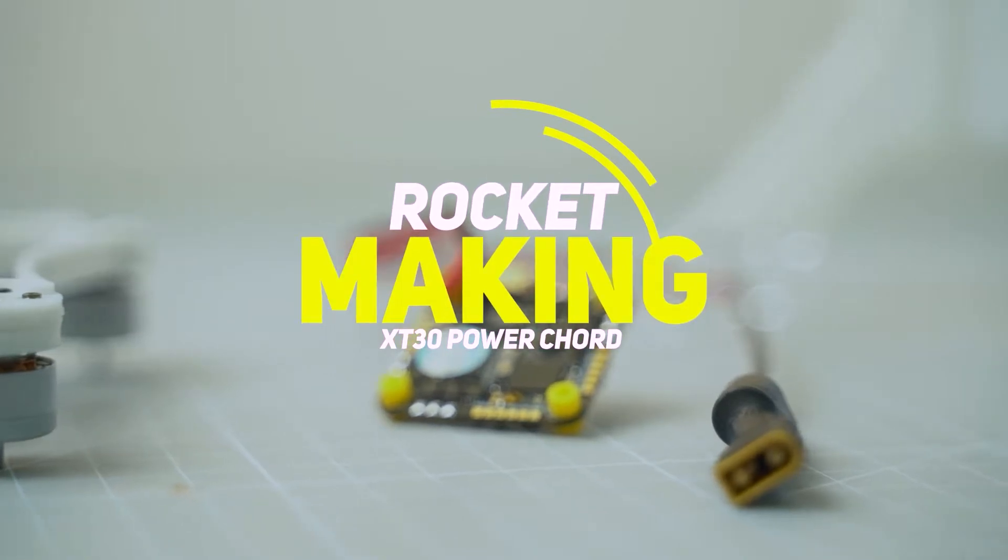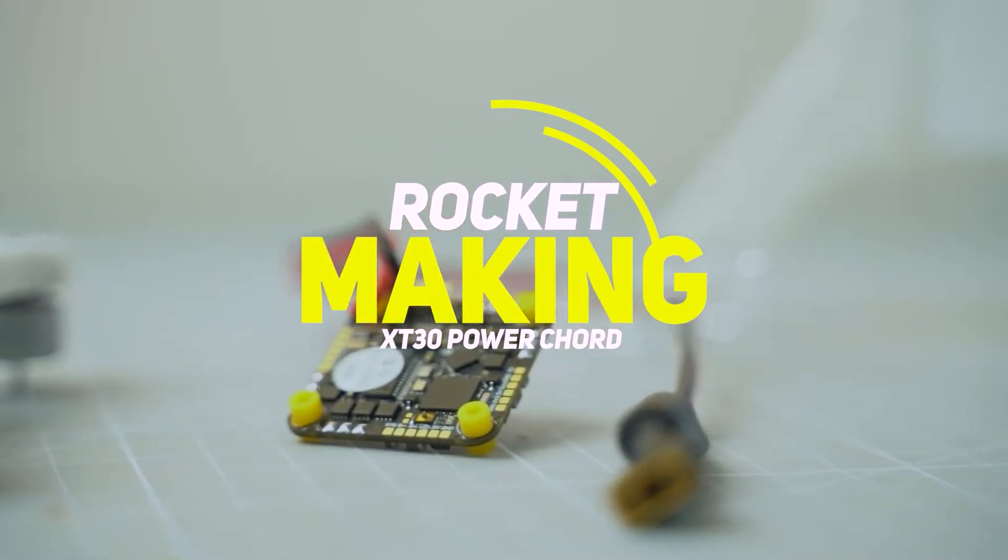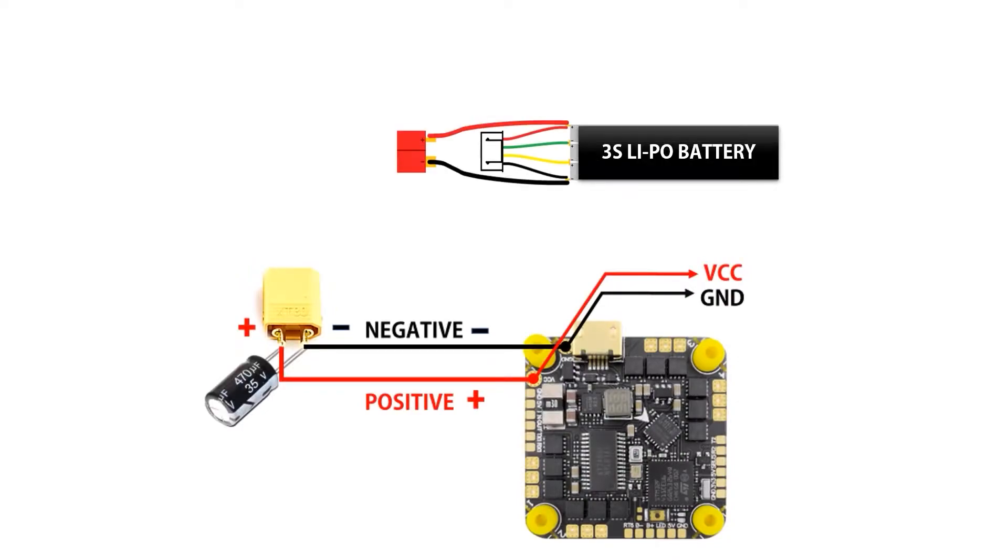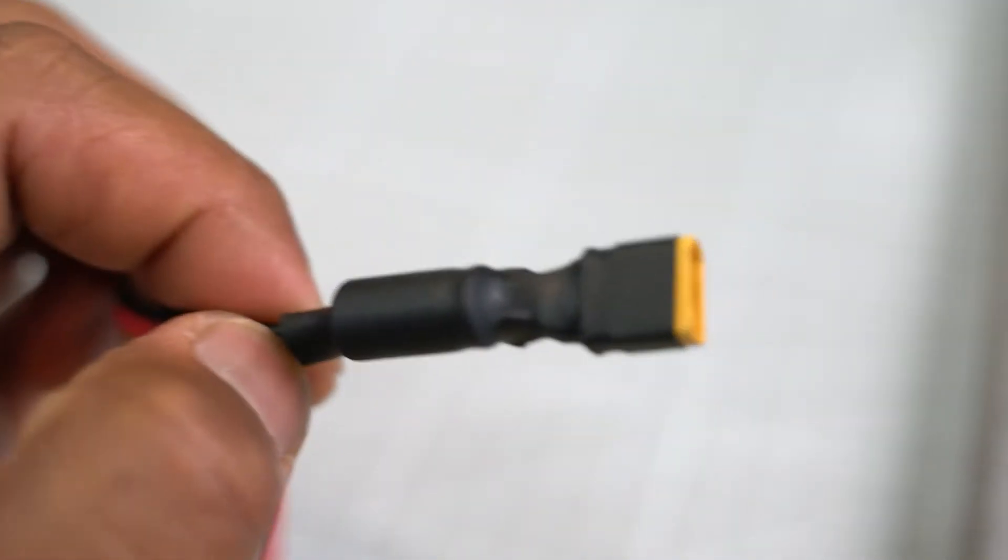Making XT-30 power cord. Last time, we finished the landing legs assembly and the motor mounting to the motor frame. Today, we will be making XT-30 power cord. This will be connected to the flight controller and the battery of the rocket.